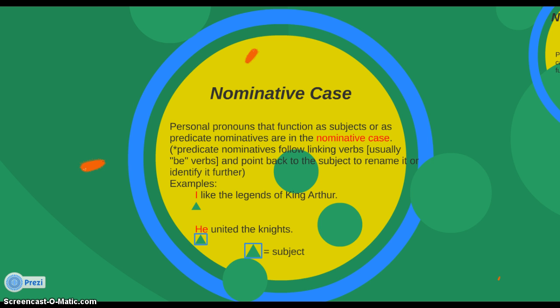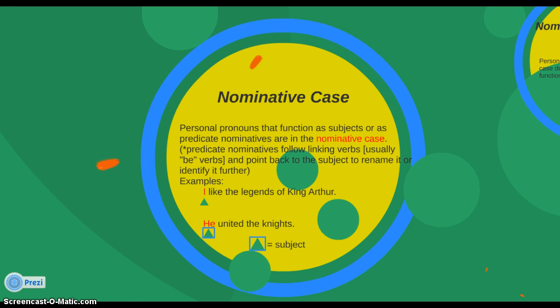Let's look at some examples. Here we have the subject I — "I like the legends of King Arthur." That is a pronoun being used as a subject, so it is in the nominative case. Another example: "He united the knights." The pronoun he is being used as a subject, so it's in nominative case.